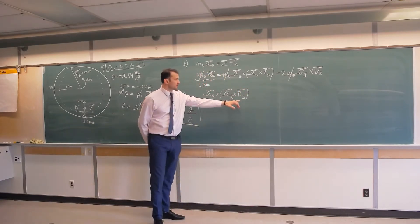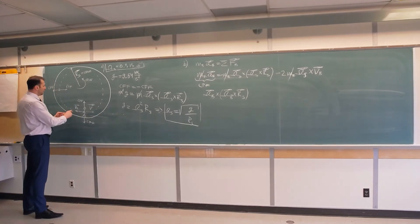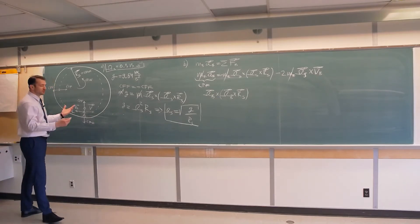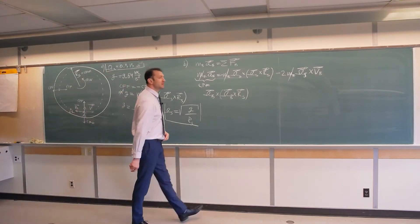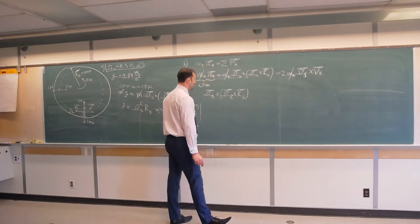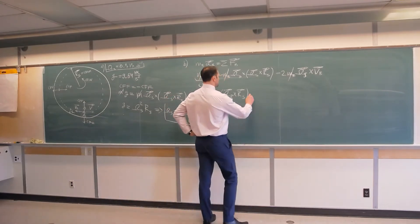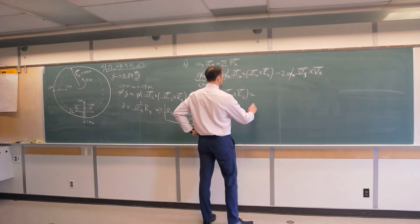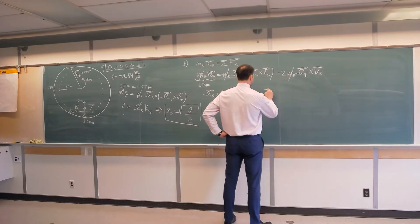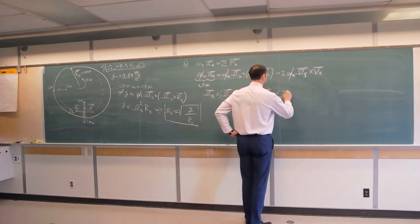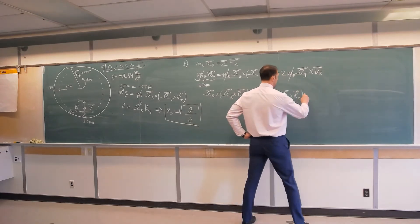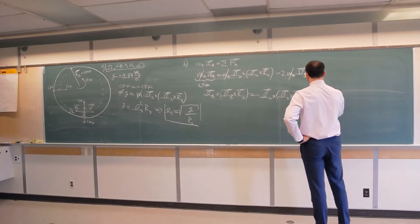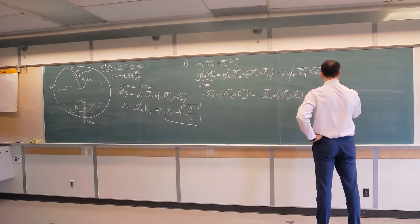I'm using the radius of the space station throughout because we assume the ball is just one meter away from the floor — so the radius of the space station and the distance to the ball are essentially the same; it's not going to make much difference. So we have negative omega_s cross omega_s cross rs, minus two omega_s cross velocity of the ball.